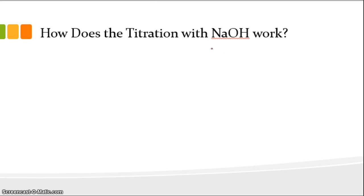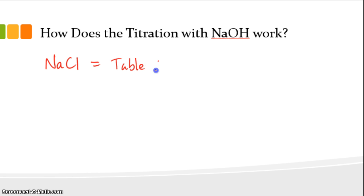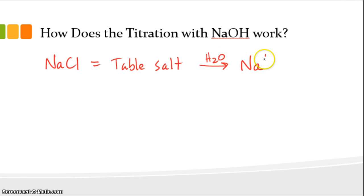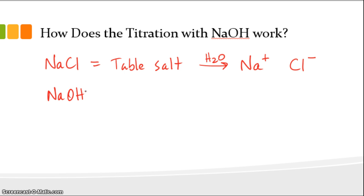We're going to add sodium hydroxide to the wine, and that's going to pull off all the acidic protons from tartaric acid, malic acid, or the other acids in wine. When you put sodium hydroxide in water, it's a salt, just like sodium chloride — that's just table salt. You put sodium chloride in water and it dissolves into its two ions, sodium and chloride, one positively charged and one negatively charged. Together they make an ionic compound or a salt.